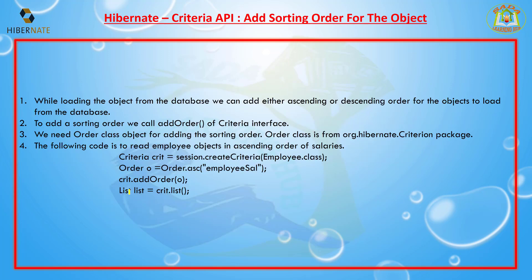Now I will show you how to add sorting order to the criteria reference. While loading objects from the database, we can add either ascending or descending order. For example, if you are loading a thousand records, we can order them in ascending or descending order. To add the sorting order, we call the addOrder() method of the Criteria interface after creating the criteria.